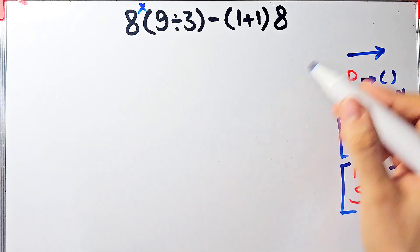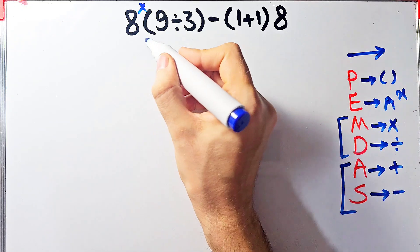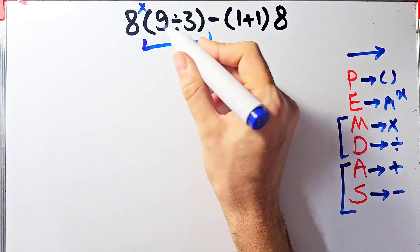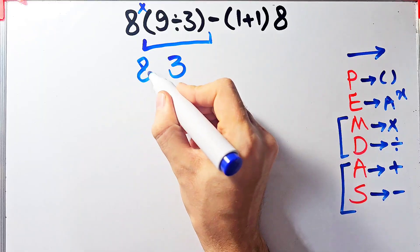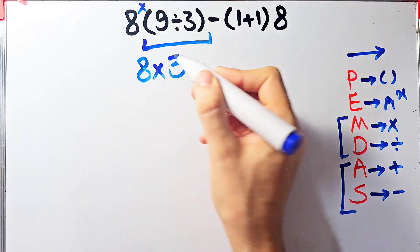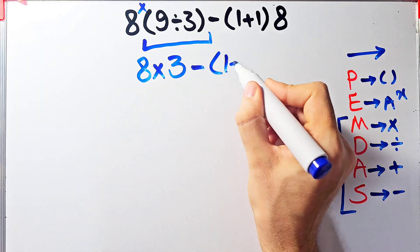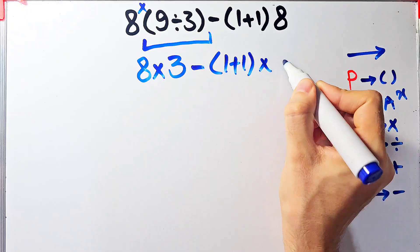According to the PEMDAS rule, first we simplify the parentheses. 9 divided by 3 equals 3. Now we have 8 times 3, then minus 1 plus 1, then times 8.